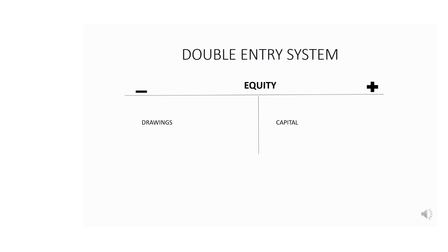Equity refers to a shareholder's interest — an amount of money invested to start a business. Equity is calculated as assets minus liabilities. It represents the amount of money contributed by the owner or owners of the business. By owner I'm referring to a one-man business, but by owners it could be a partnership, close corporation, public company, or private company with more than one owner.